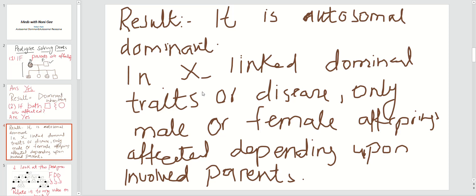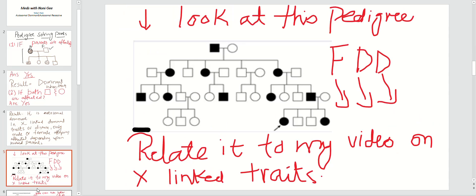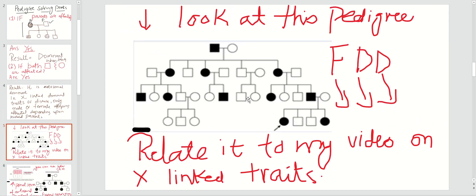As I showed you in the X-linked dominant video, in X-linked dominant diseases only male or female offspring are affected depending upon the involved parent. In X-linked dominant, only female offspring or only male offspring will be involved depending on which parent is actually involved. Look at this X-linked dominant disorder pedigree.